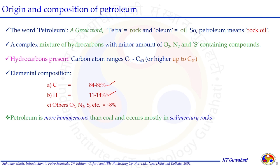Petroleum in general — crude oil and natural gas — is more homogeneous in terms of composition than coal, and petroleum is formed in sedimentary rocks. When we talk about coals, there are varieties depending on elemental composition or proximate and ultimate analysis. We can classify them as lignite, bituminous coal, and others. Petroleum substances are more homogeneous than coal.